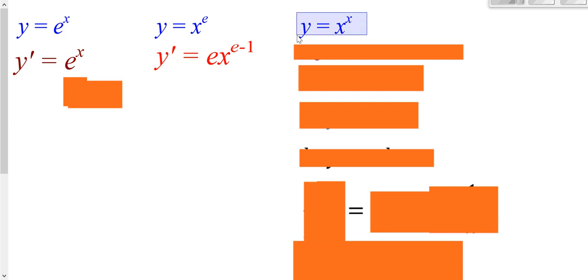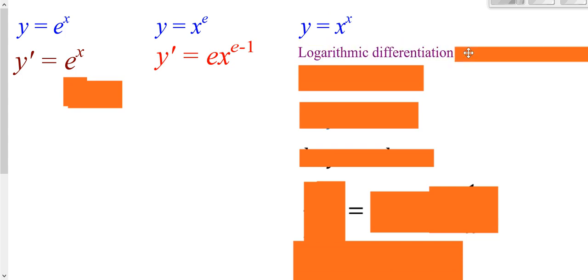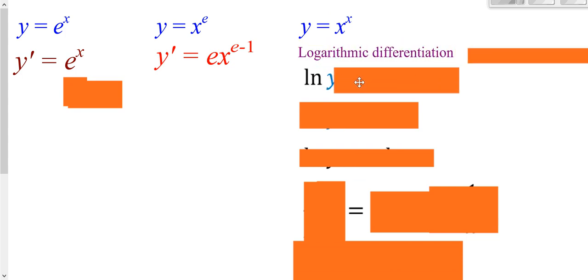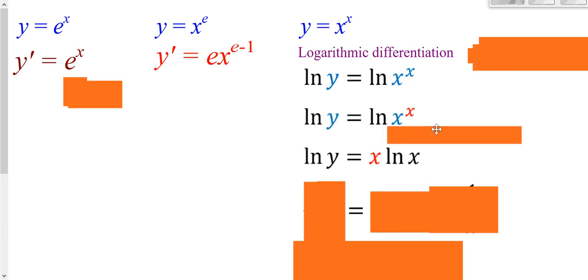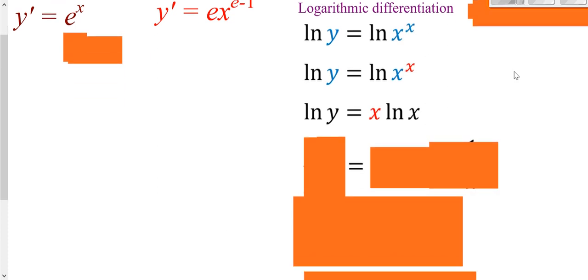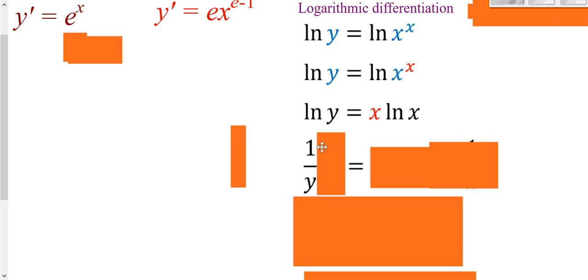But what do you do when you have a variable raised to a variable? This is where we use logarithmic differentiation. Apply a natural log to both sides — on the right side, the exponent X can come down in front of the log. We haven't done any calculus yet, just algebra. Now we take the derivative: the derivative of ln(y) is 1 over y times the chain rule, and the derivative of y is dy/dx or y-prime.